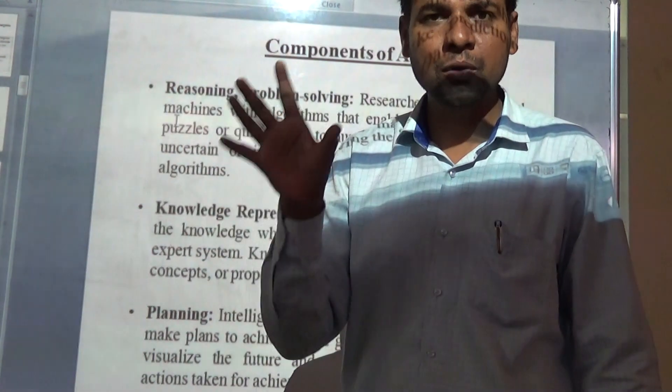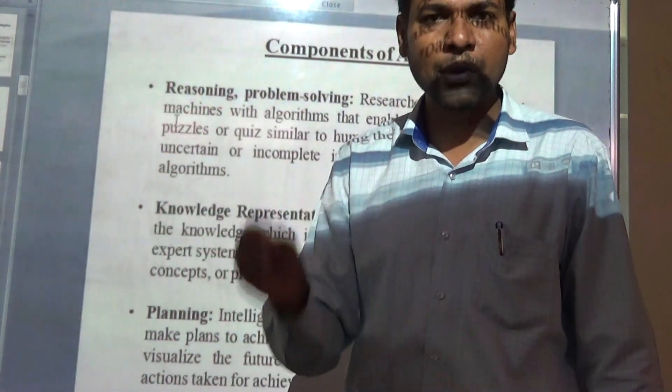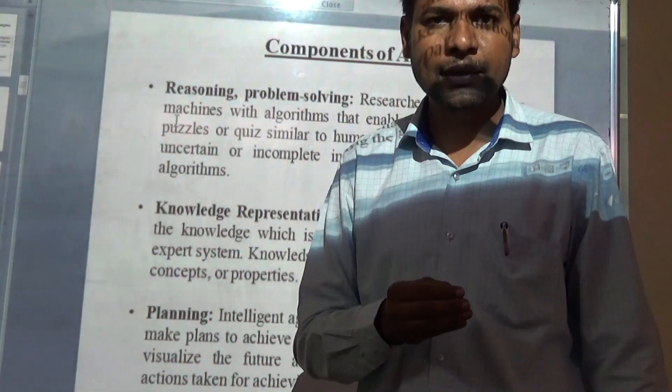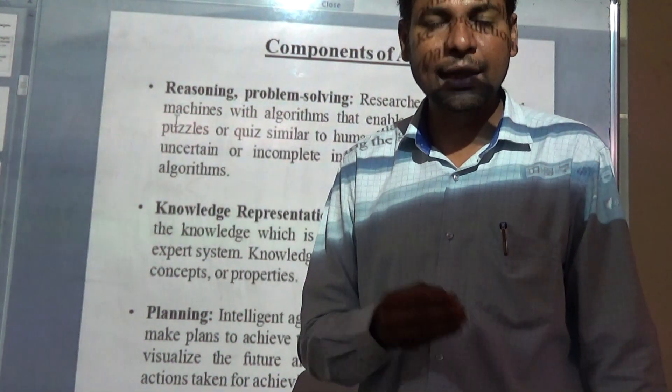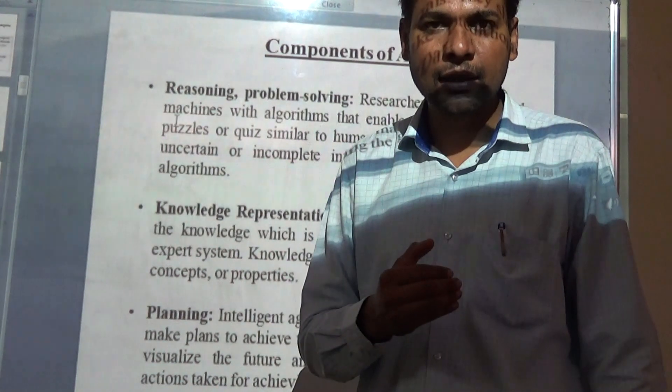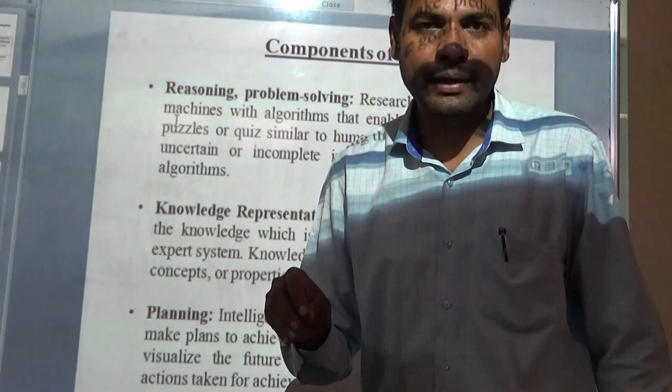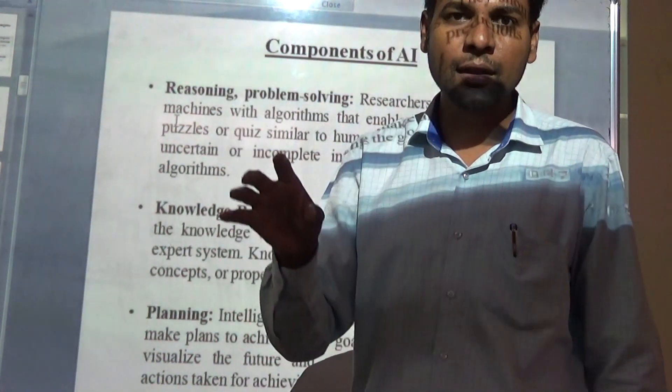For example, if I want to solve a certain problem, for that problem I design some agent — an intelligent agent. So I should give knowledge to that particular intelligent agent.